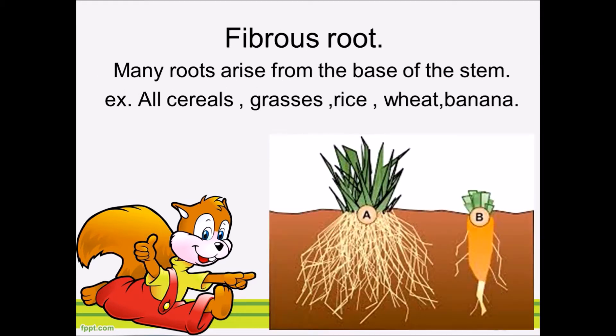Many roots that arise from the base of the stem are called fibrous roots. Fibrous roots we can see in cereals, grasses, rice, wheat, banana, etc.